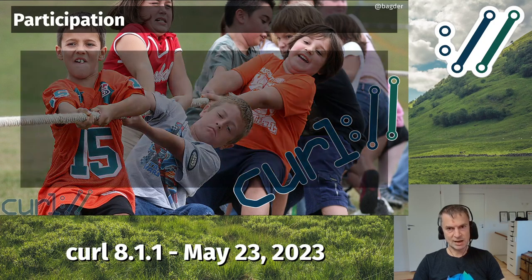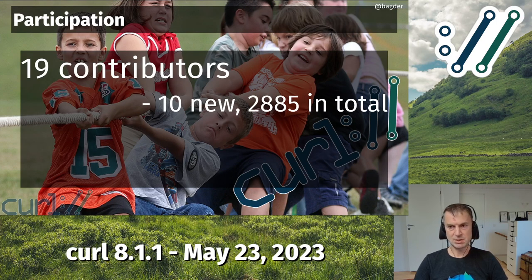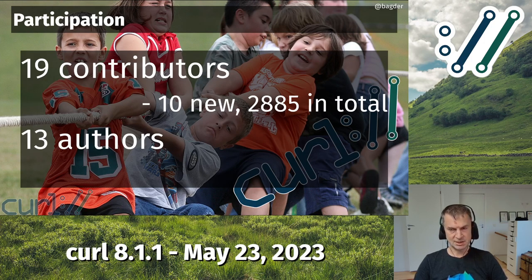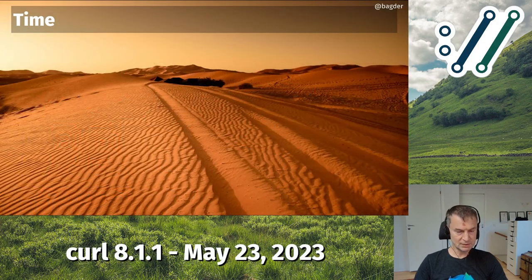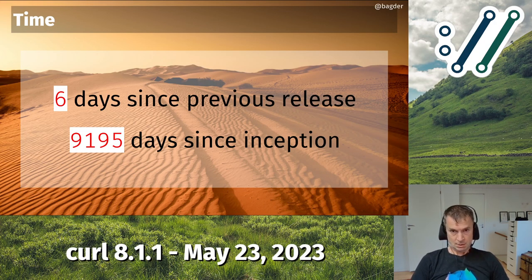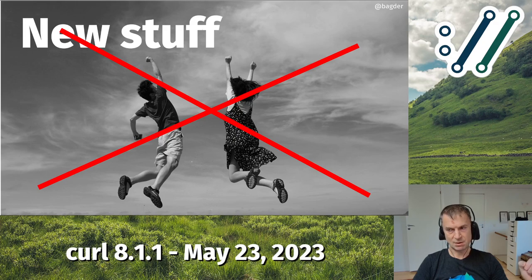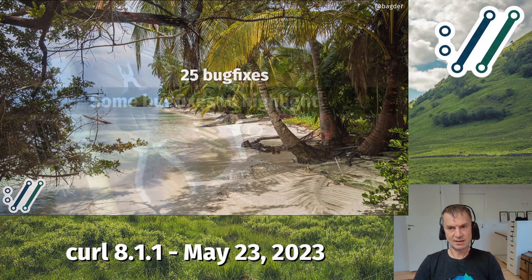This time we only had six days since the previous release, but still we had contributions from 19 different people, 10 of them new, so 2,885 in total. 13 of them authored a commit that we merged into git, and six new. 1,148 authors in total. So in six days, quite an impressive amount of people. Six days and 9,195 days since we started this journey. It's only six days since the previous release because of some regressions we shipped in the previous release. So no new things in this release, just 25 bug fixes.